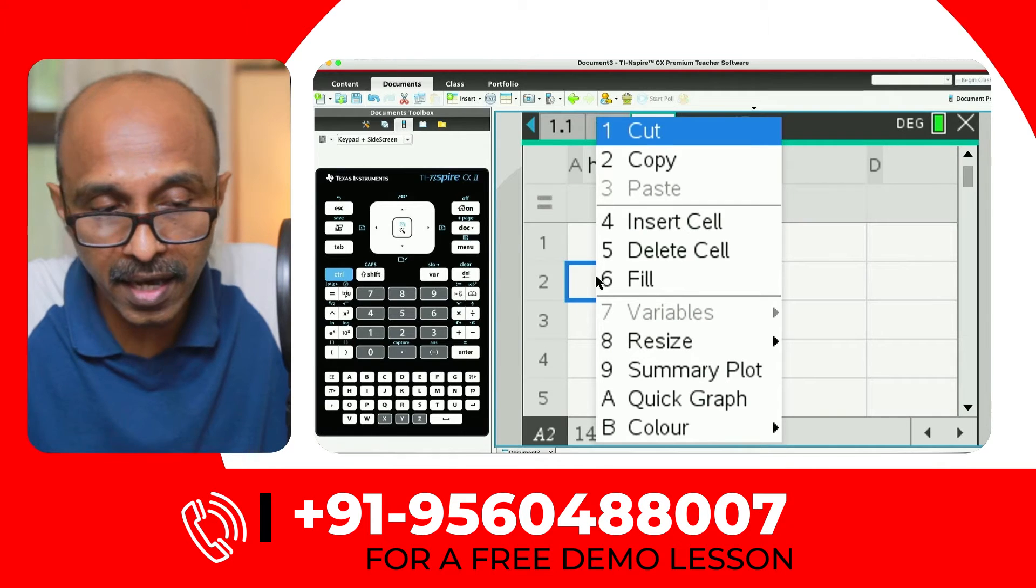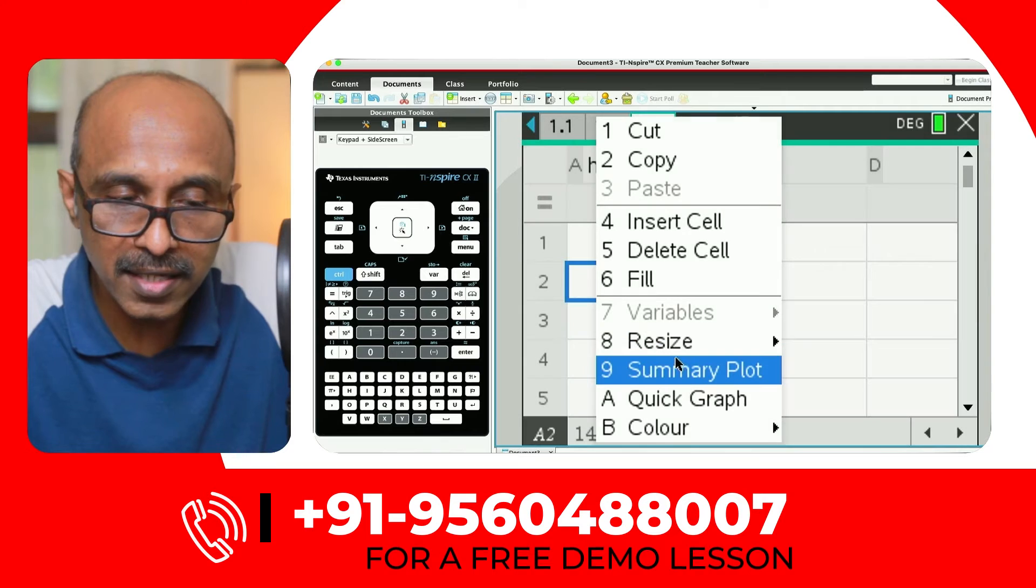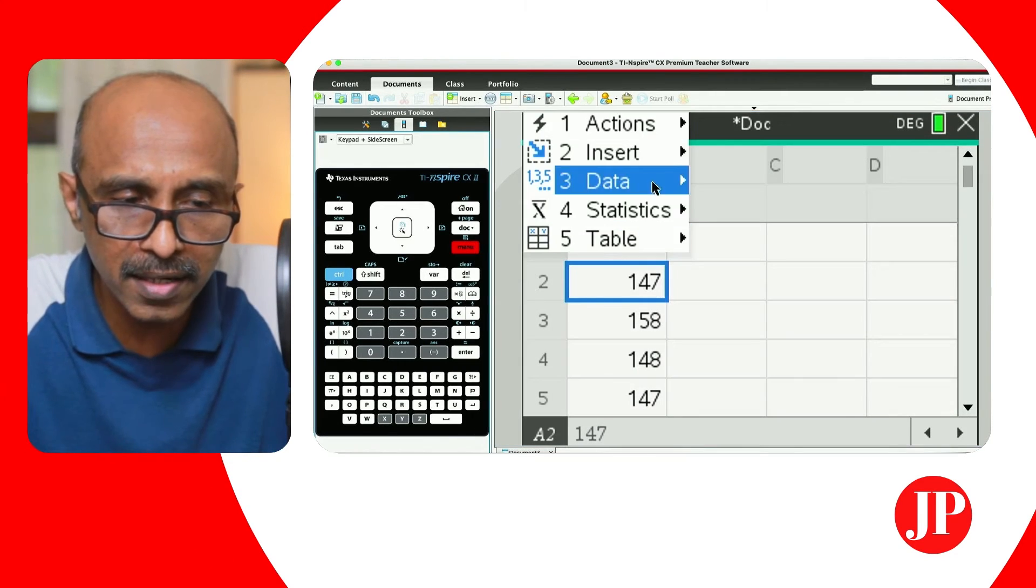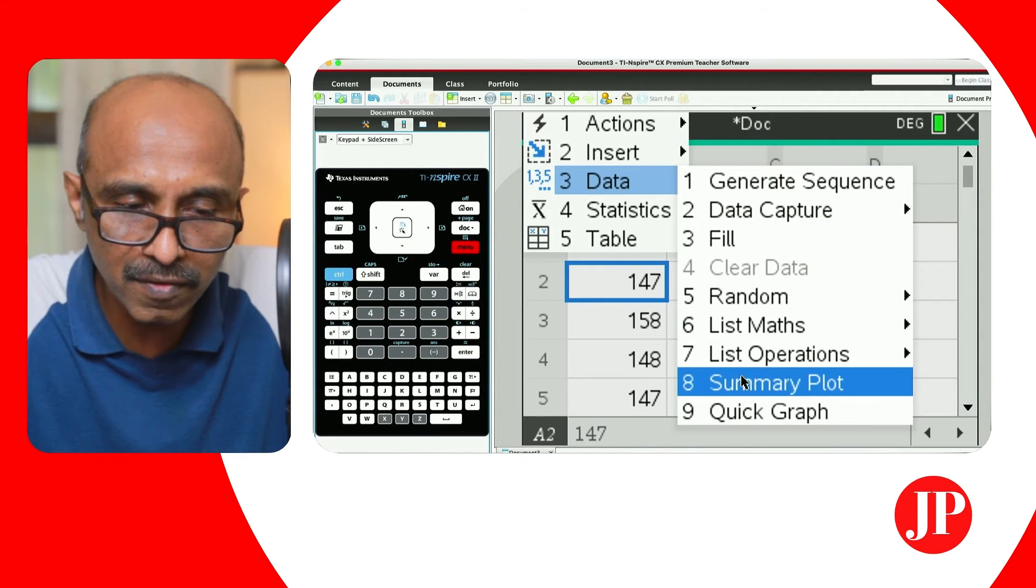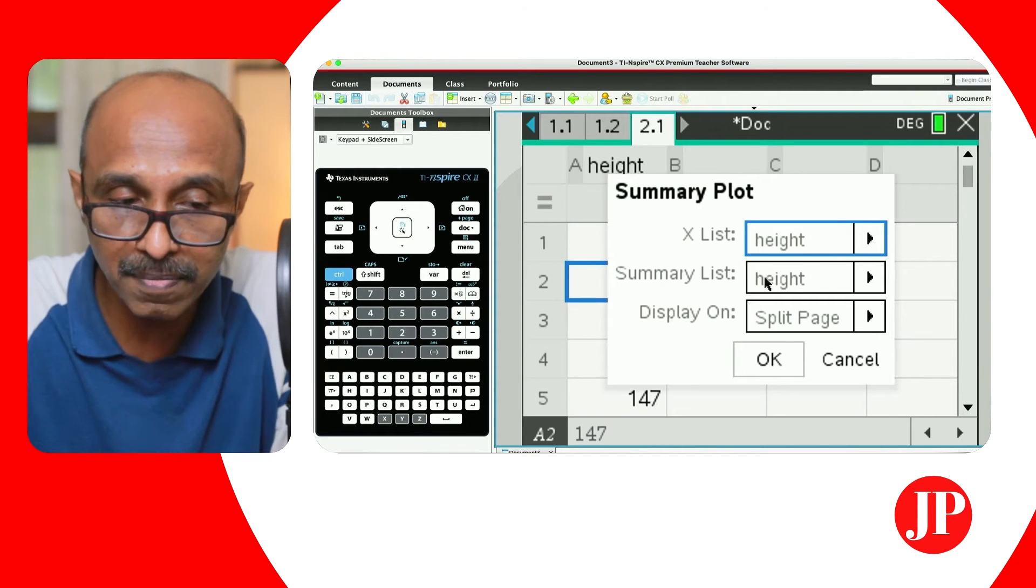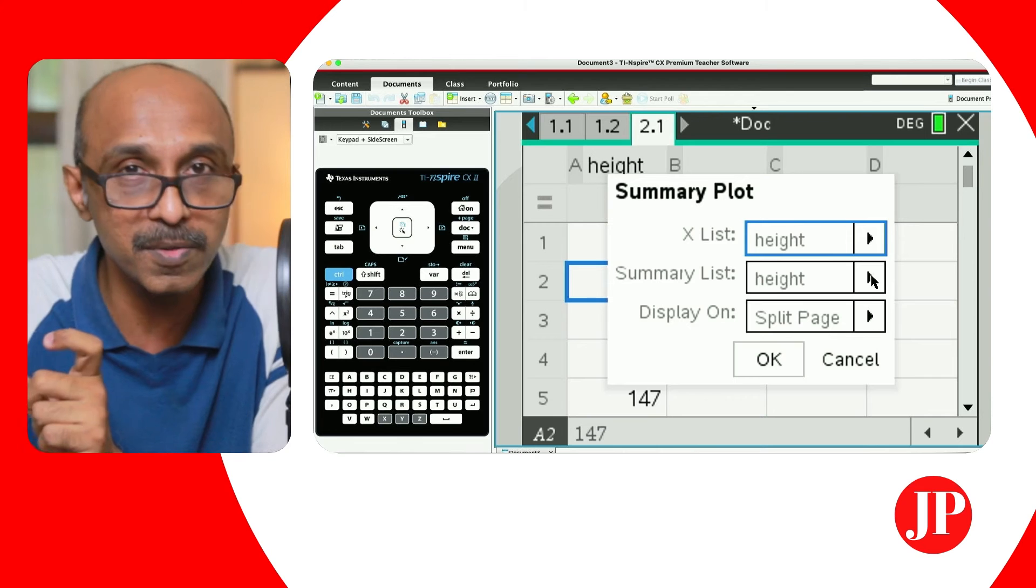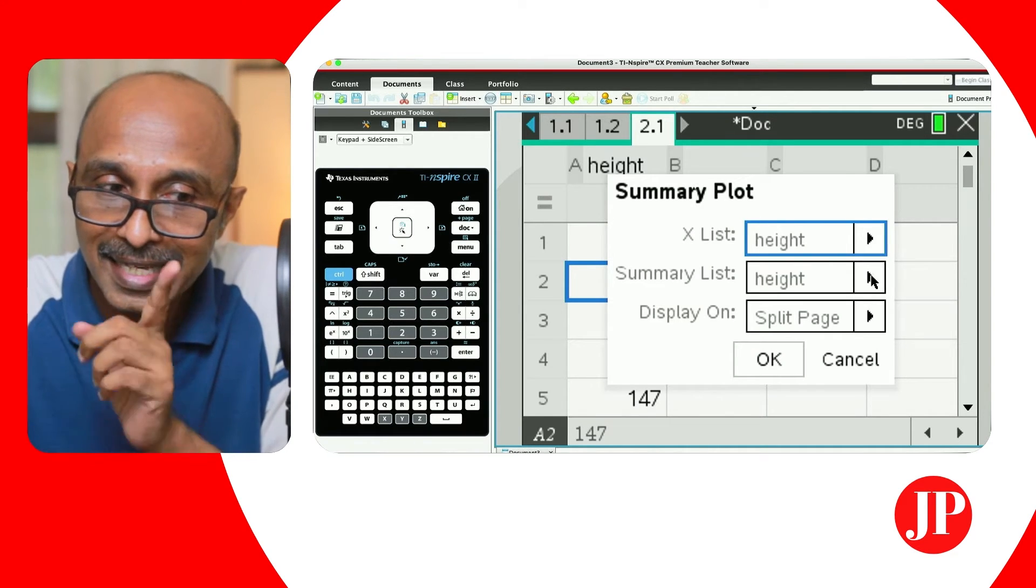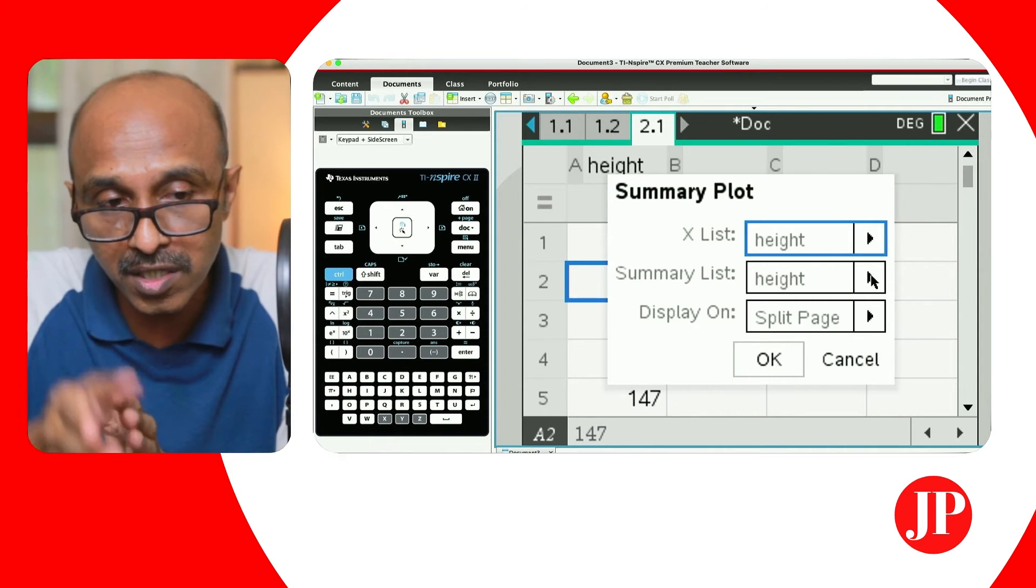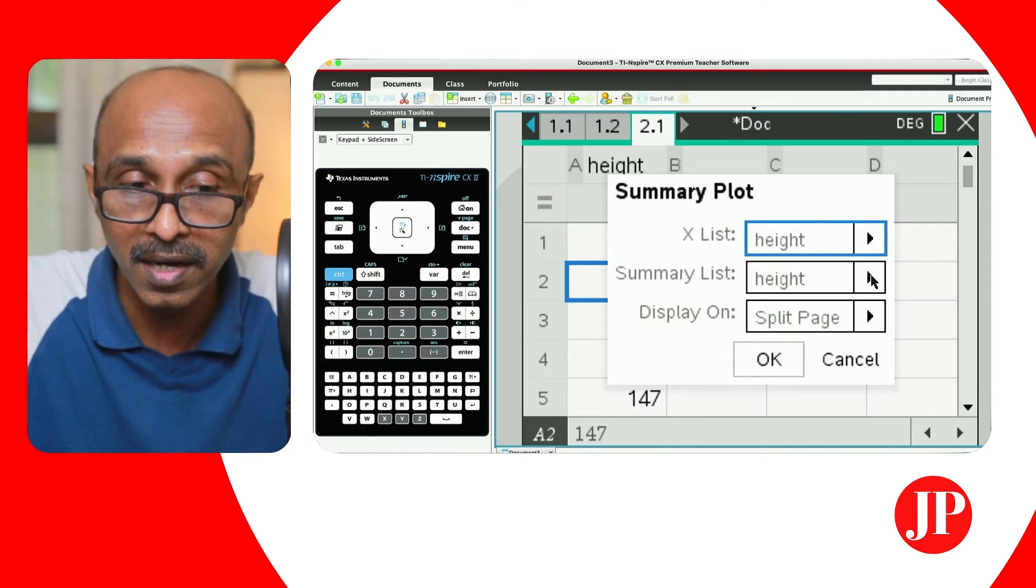So now if I want to add a summary plot, if I hit right click or you can do the control menu to get the right click options on your handheld, and I say summary plot, you can either come to summary plot this way, or you can go via menu and data and number eight gives you summary plot. And if you can notice that X list is height, whichever list you're looking at, but it's asking for a summary list. And that basically should be the frequency column. So if it's not a frequency distribution, this technique might not work. So either you have to create a frequency distribution, meaning you have to find out how many of each data points are there. And then only this technique will work.